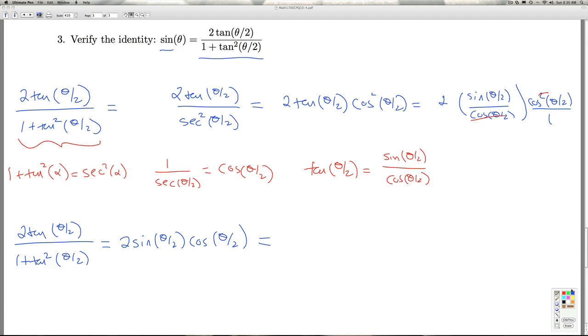And now, believe it or not, I'm done. Because I know from the double angle identity, 2 sine of an angle, cosine of an angle, is the sine of twice the angle.